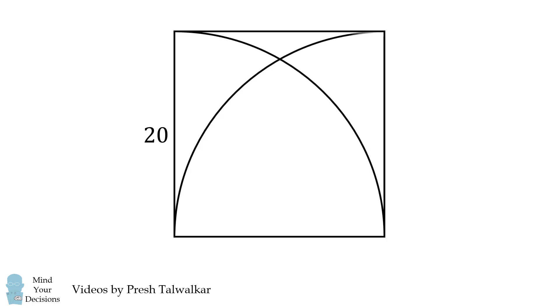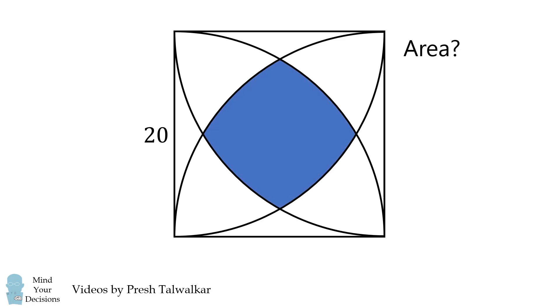Mind Your Decisions. I'm Presh Talwalkar. Start with the square whose side length is 20. Draw quarter circles inside this square. What is the area of the region shaded in blue? That's part one of the question. Part two is to solve for this area and part three is to solve for this area.